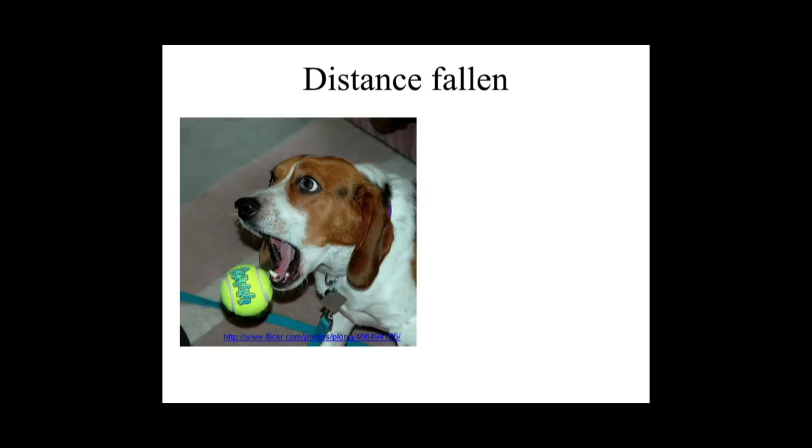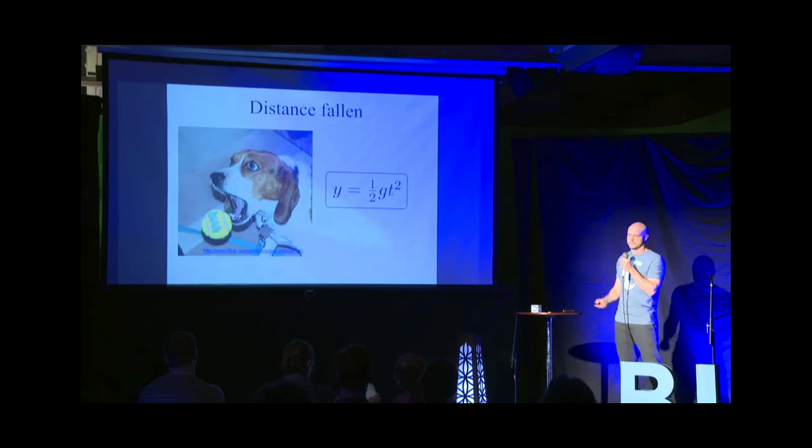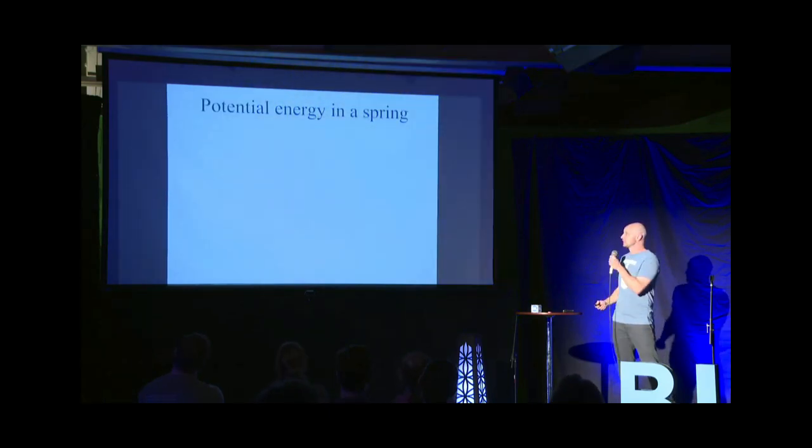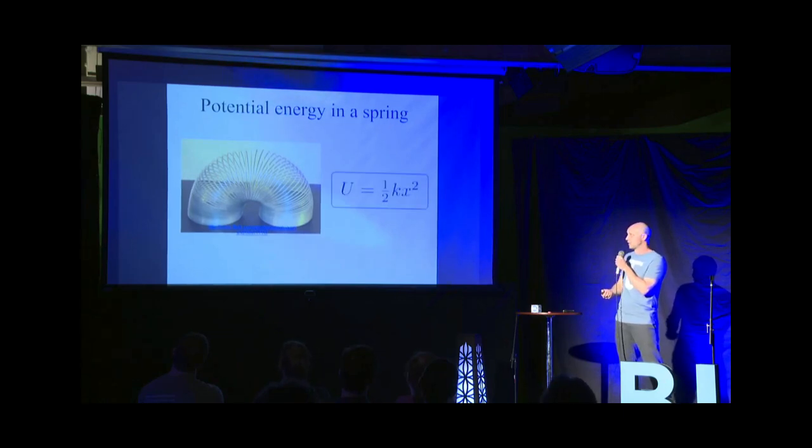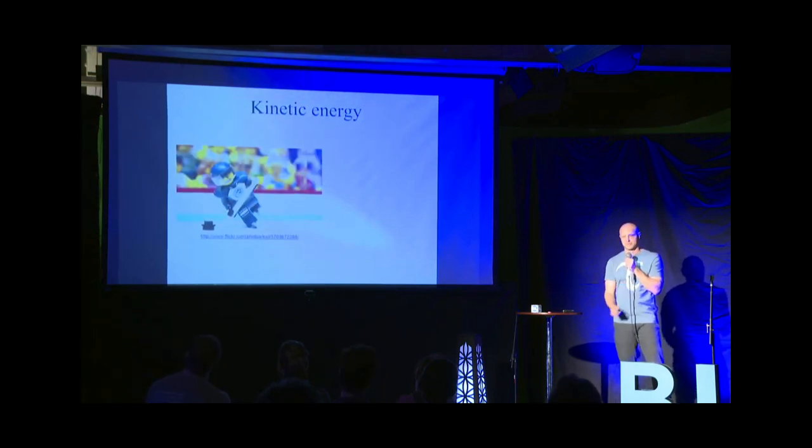We're going to start with the formula for the distance fallen. So suppose that you drop a ball. How far does it fall? Well, it falls a distance y equal to one-half gt squared, where g is the acceleration due to gravity and t is the time fallen. The potential energy in the spring can be calculated by considering the stiffness of the spring, k, and the distance it stretched from equilibrium, x. The potential energy is one-half kx squared. And finally, the kinetic energy is the energy of motion. If you take a puck and you hit it across the ice, the puck has mass m and velocity v. So its energy of motion is k equals one-half mv squared.